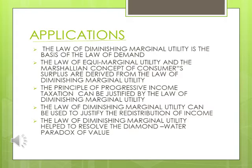The law of diminishing marginal utility can also be used to justify the redistribution of income, where the government uses progressive taxation to redistribute wealth from higher-income to lower-income groups.